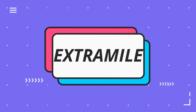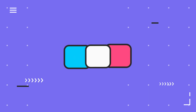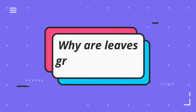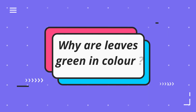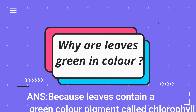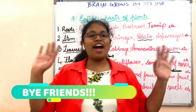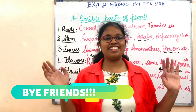Extra mile: Why are leaves green in color? Because leaves contain a green color pigment called chlorophyll. Bye friends!